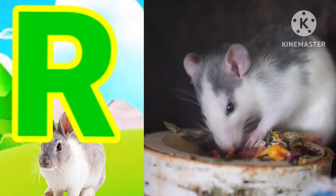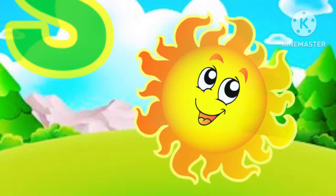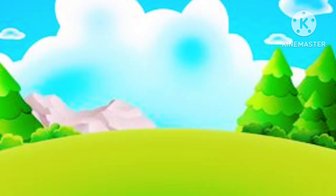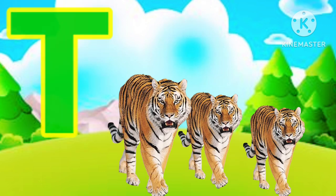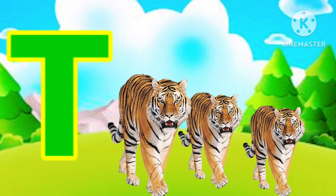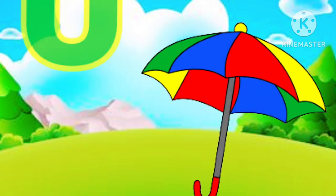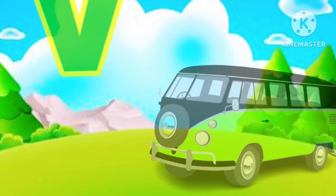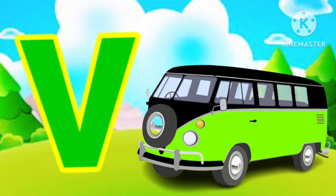R for rat, S for sun, T for tiger, U for umbrella, V for lamp.